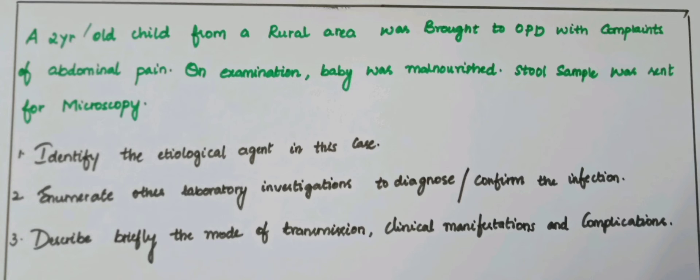Clinical manifestations include abdominal pain, nausea, vomiting, fever, weight loss, diarrhea, and malnutrition with growth retardation in chronic infection.